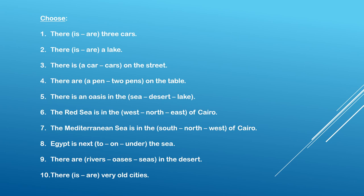Number one: there is one car — there is a car. Number two: there is a lake. Number three: there is a car on the street. Number four: there are two pens on the table. Number five: there is an oasis in the desert. The Red Sea is in the east.